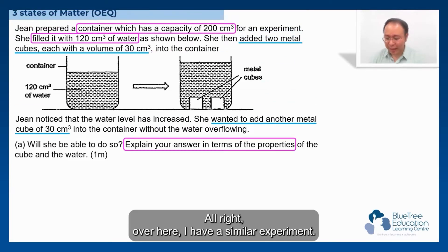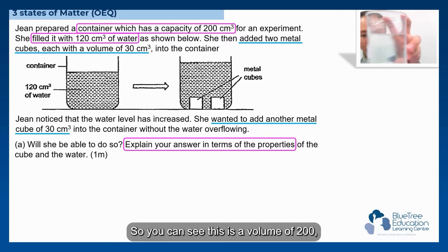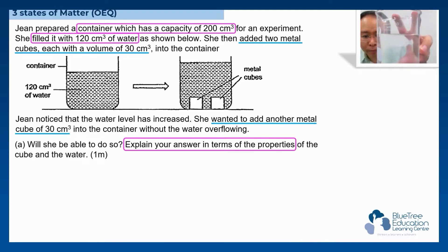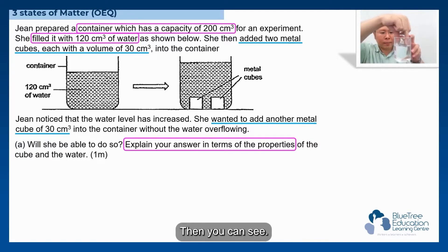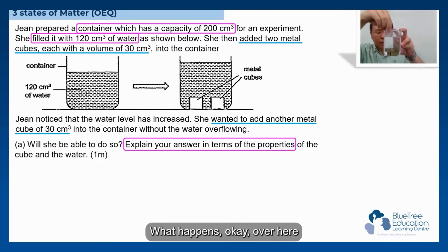Alright, over here I have a similar experiment. So you can see this is a volume of 200 cm cubed. And then I'm going to add in the solids, which are the metal weights, and you can see what happens.